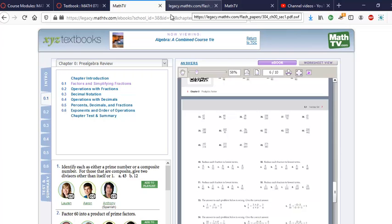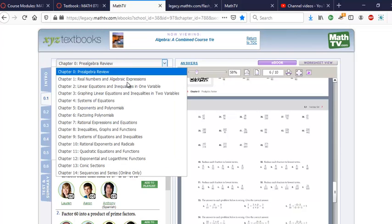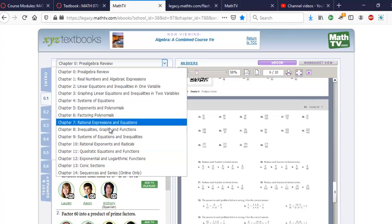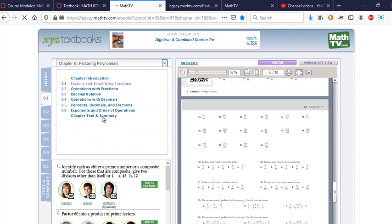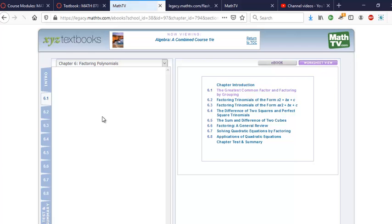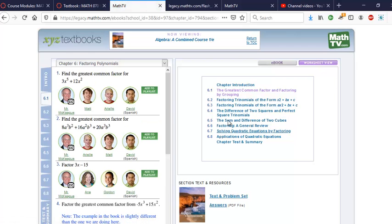So if you want to see other chapters click here. You can go to say chapter 6. There you go chapter 6. And then you can find the section you want here.